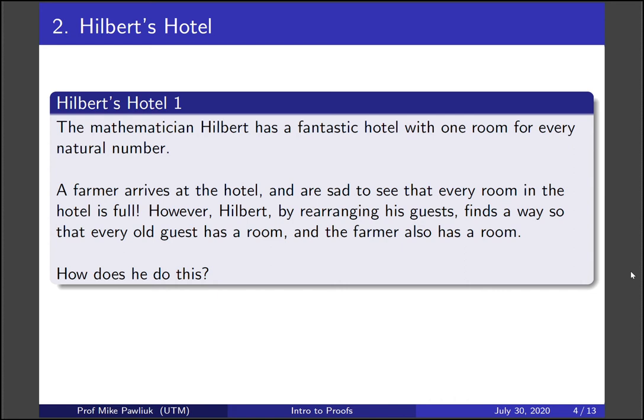A farmer arrives at the hotel and they're sad to see that every room in the hotel is full. However, Hilbert, by rearranging his guests, finds a way so that every old guest has a room and the farmer also has a room. How does he do this? Take a moment to think about this. How can Hilbert rearrange the guests to find space for their new person?